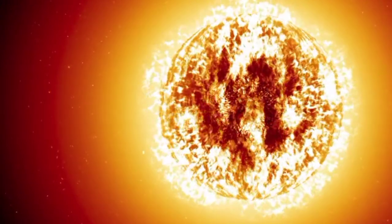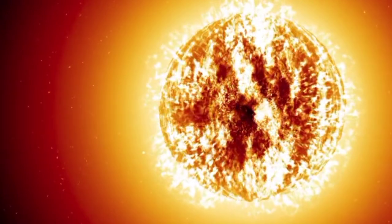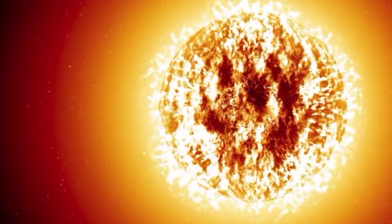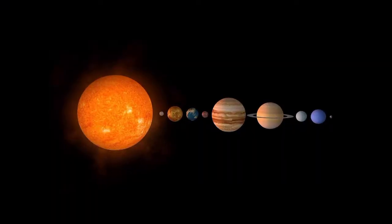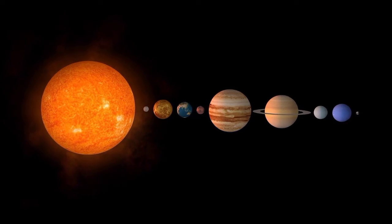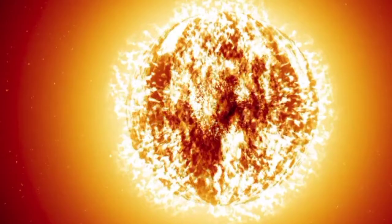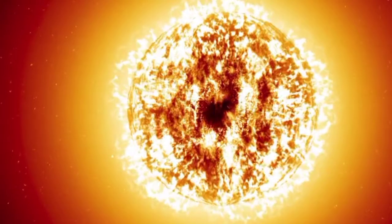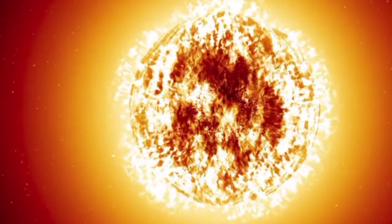If we could replace the Sun with this huge star, it would easily engulf the orbits of Earth, Mars, Jupiter, and even Saturn, which is on average 886 million miles away or 1.4 billion kilometers away. It would take almost 9 hours at the speed of light to travel around it.